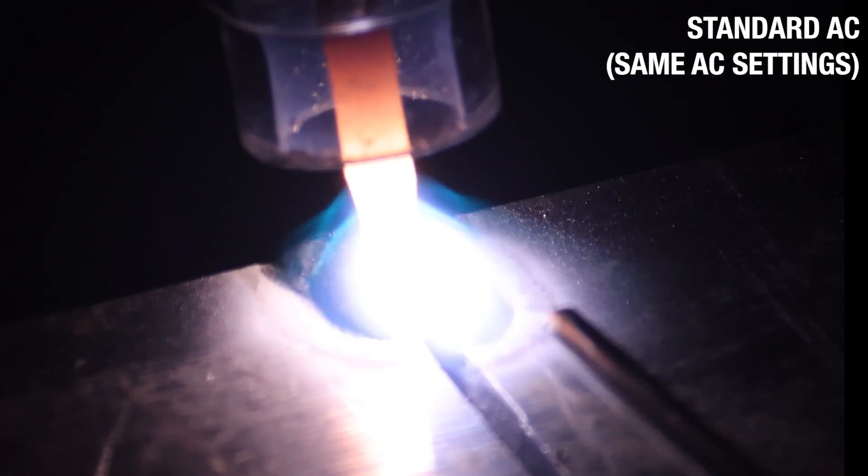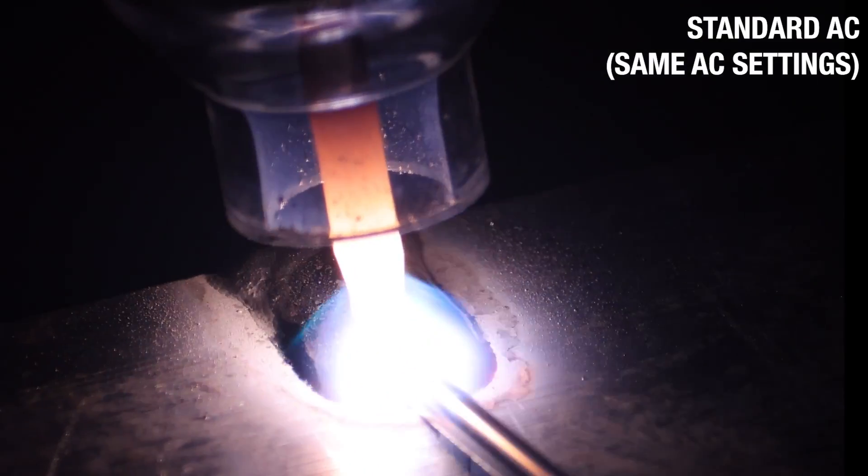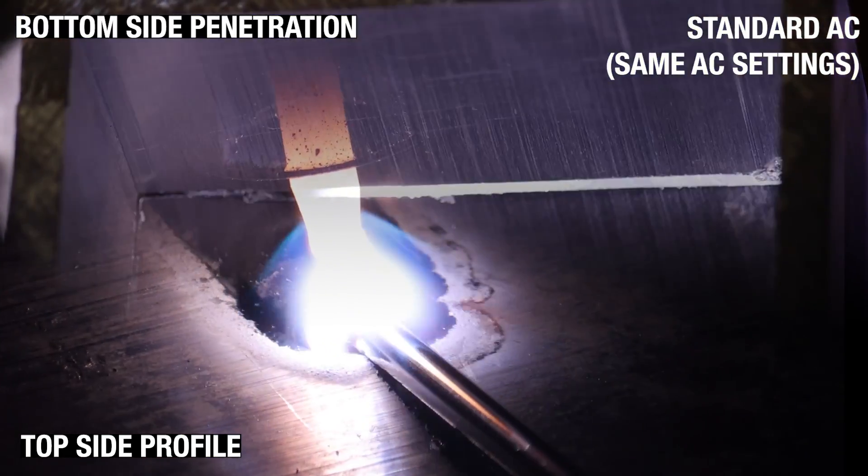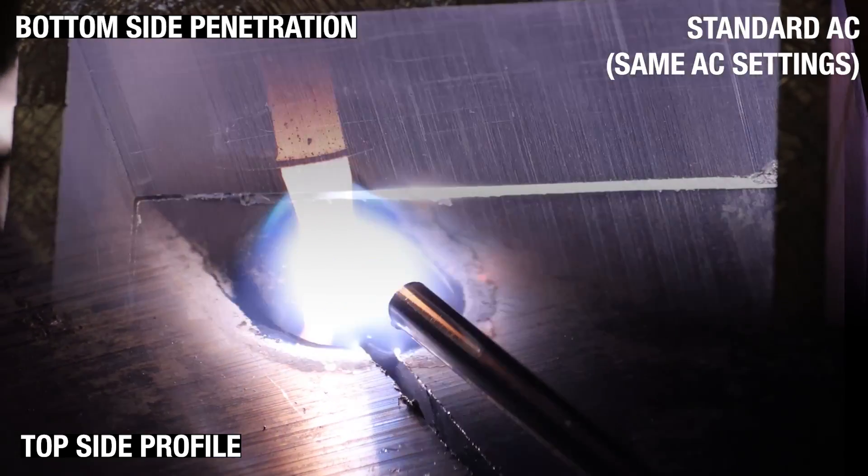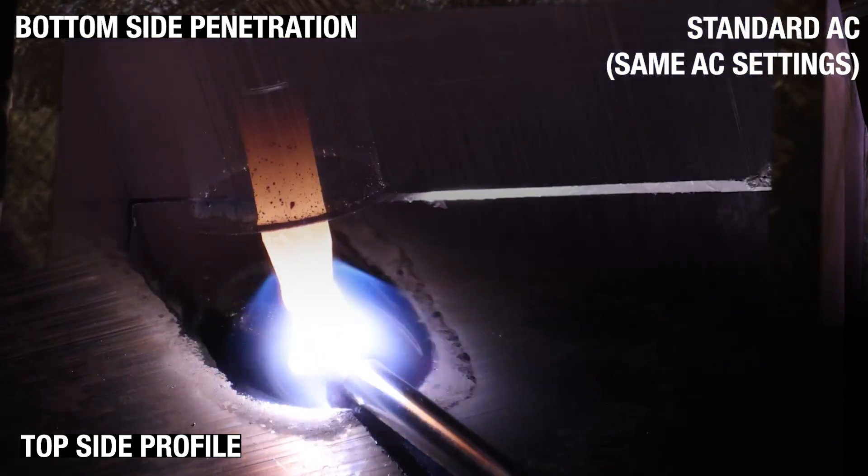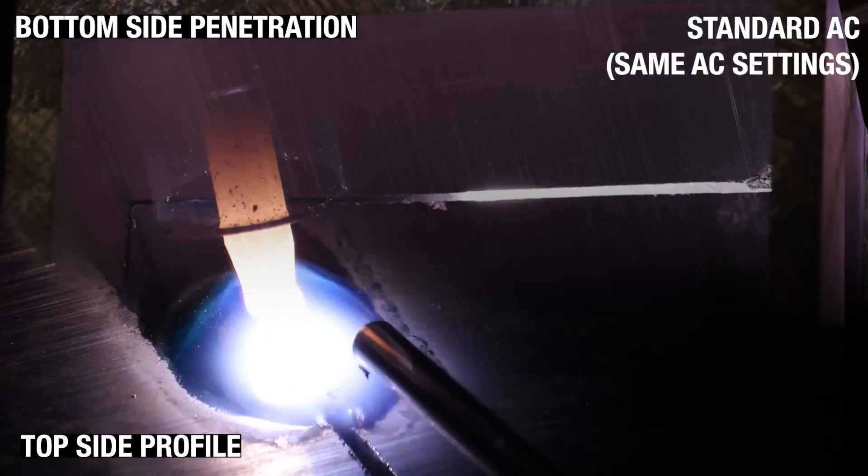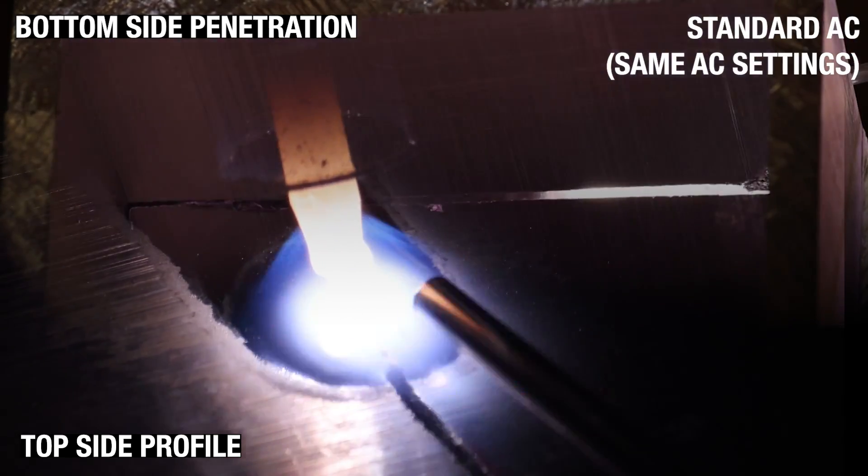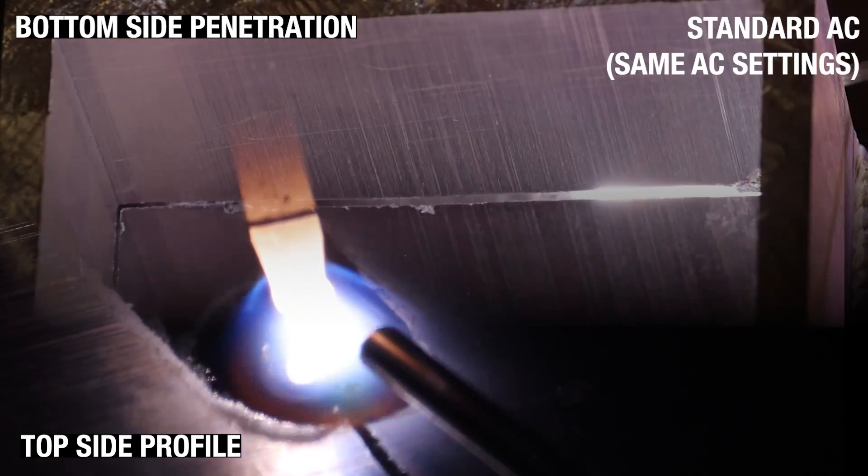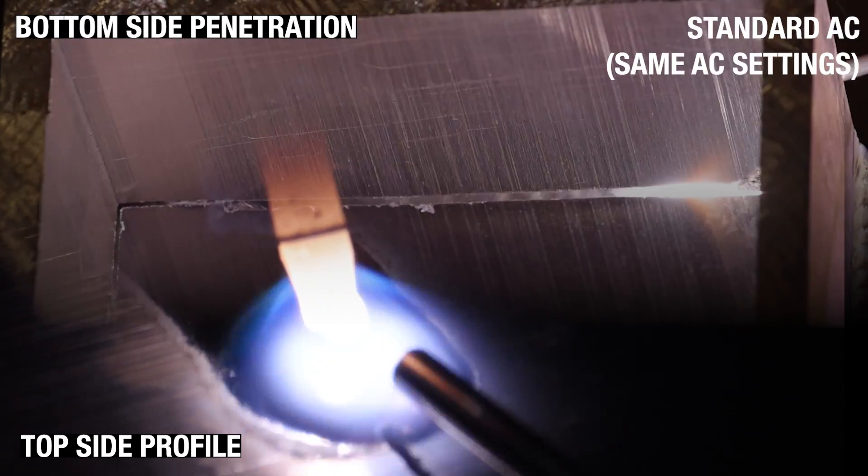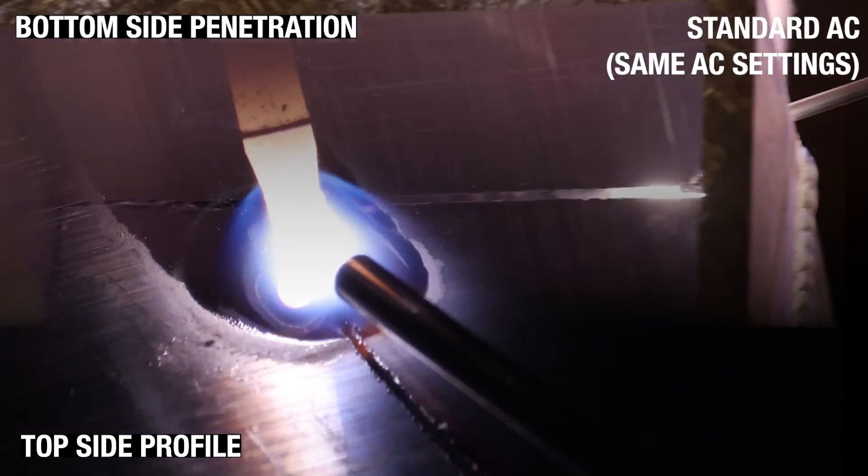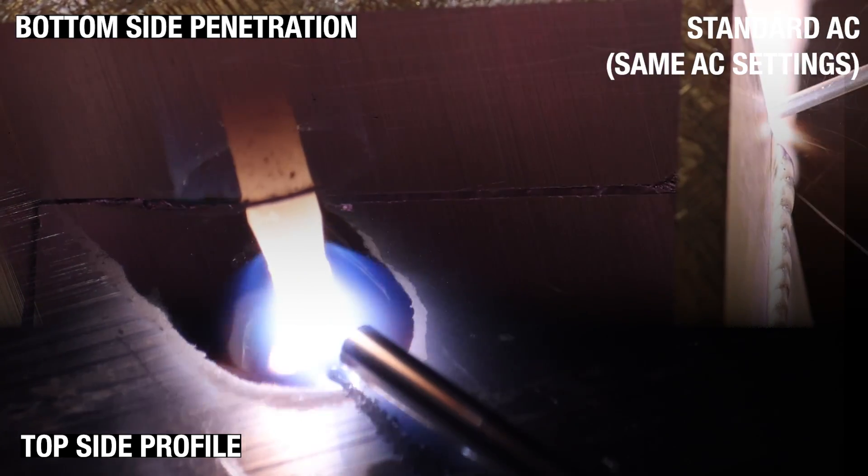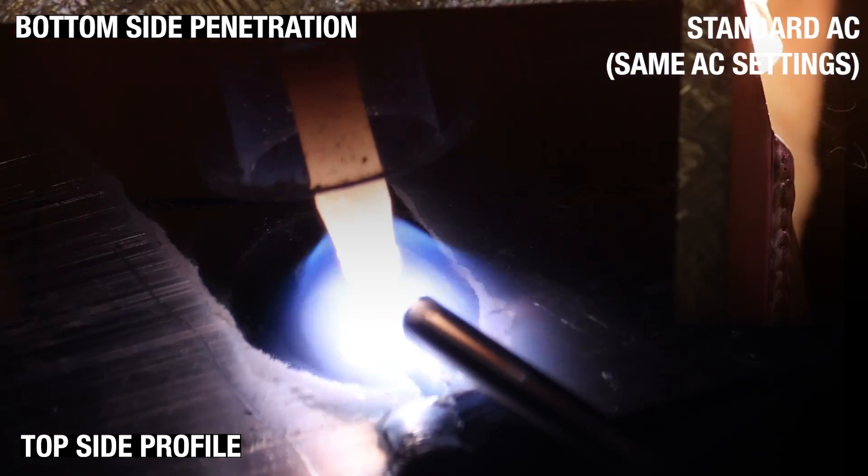Alright, here we are back on this quarter inch thick square tubing. We're running regular AC now, same settings as far as Hertz and balance. And you can see it's taking a lot longer to establish the puddle. It's a little bit lazier. You can see it's not trying to sink down like it was on the advanced AC when we're running that. And I'm not having to really jam rod in just because it can't get hot enough to really start sinking in. So you can see all the way, this is a much colder weld. Even kind of waiting on it, trying to sink it in, it's still not really trying to sink down for us. So a much colder weld.